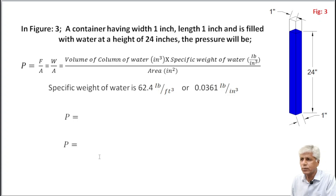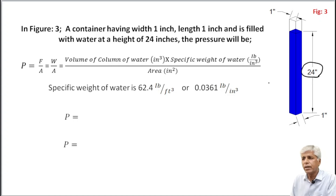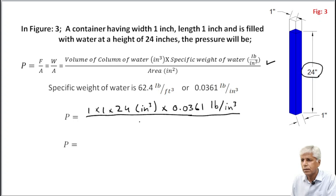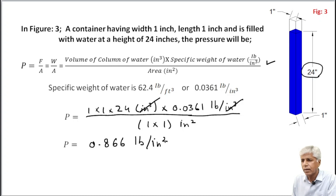Now in Figure 3, a container having width 1 inch and length 1 inch is filled with water at a height of 24 inches. You see the height is different from the previous two examples. The pressure will be calculated through the same formula. Specific weight of water is the same, 0.0361. By substituting: 1 inch by 1 inch by 24 inches, multiplied by 0.0361 pounds per cubic inch, divided by 1 by 1 square inch. After simplification, we get 0.866 pounds per square inch.